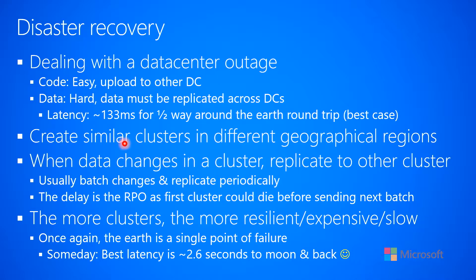A storage service will typically batch up the changes, so every maybe five minutes or so it'll take a batch and send it to the other data center. Which means you have an RPO of five minutes — if changes happen and before five minutes that data center goes out, then the data doesn't get sent to the other data center. So you can create similar clusters in different geographical regions, and when data changes in a cluster, replicate it to the other cluster, using a data storage service that will do this for you and batch those changes periodically.